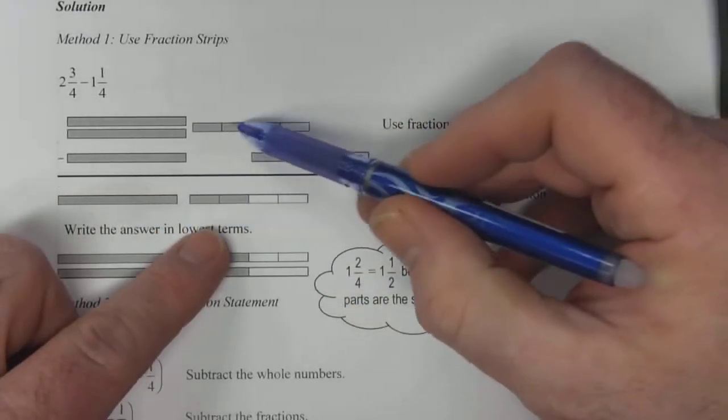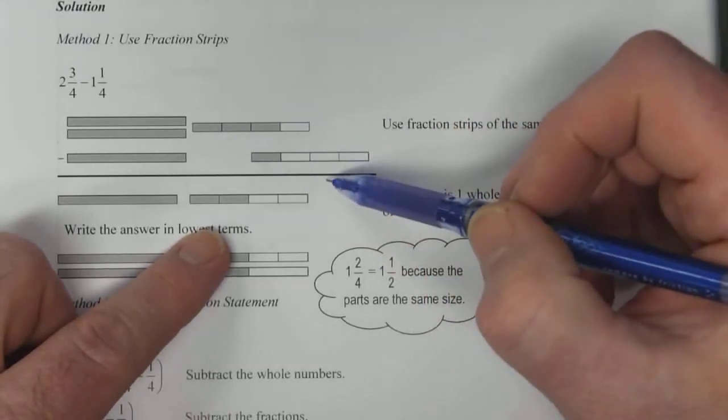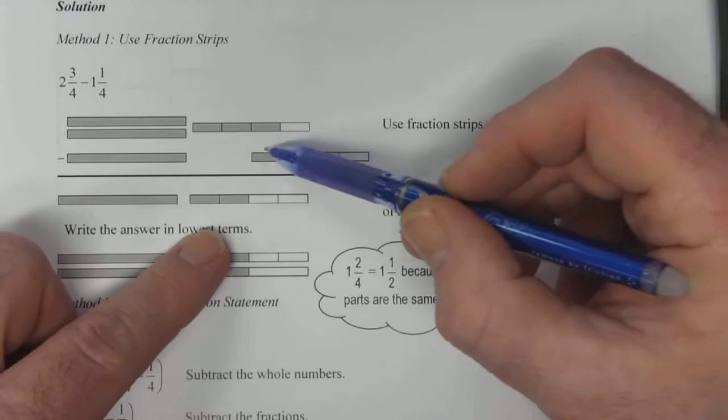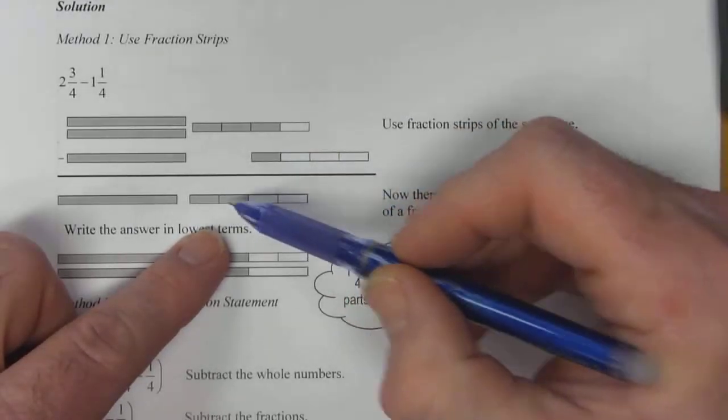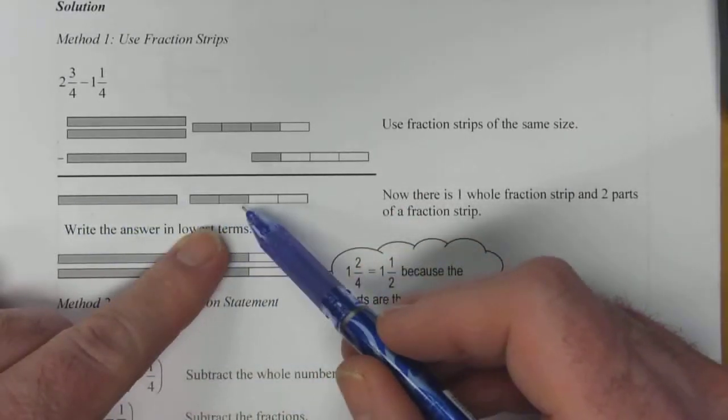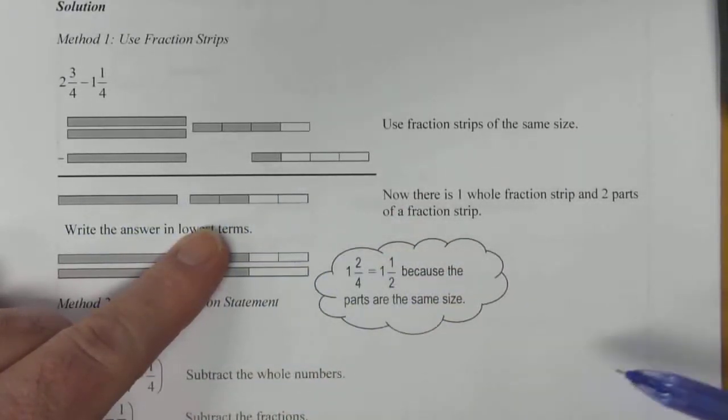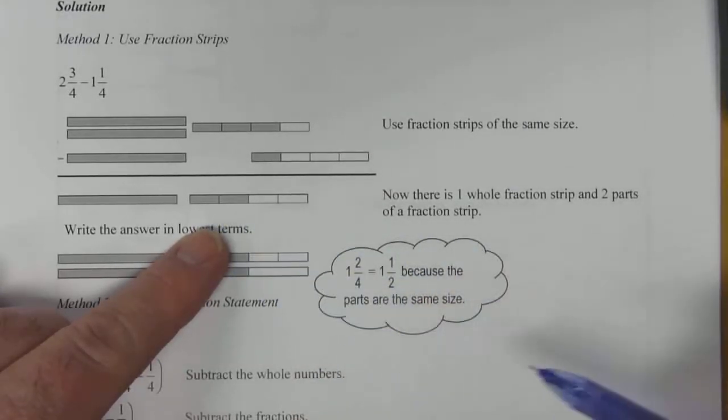And then over here we've got 3 quarters of a strip shaded. So there's three pieces there minus one piece that's shaded here. So 3 minus 1 gives you 2. So our answer here in fact is 1 and 2 fourths. So we've got one whole strip and then two parts of the fraction strip left.